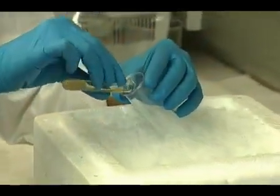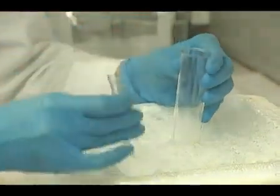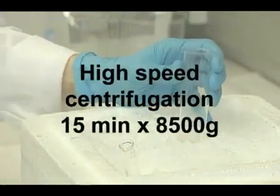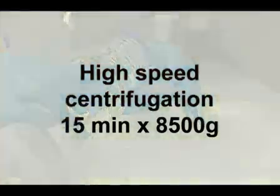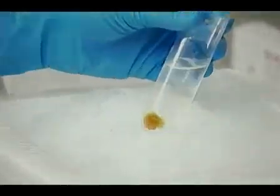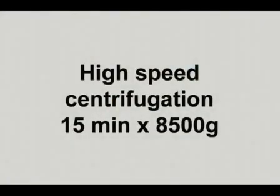Dilute the suspension with more isolating buffer and centrifuge again for 15 minutes at 8500g. Discard the supernatant, resuspend the pellet in resuspending buffer, and centrifuge again at 8500g.